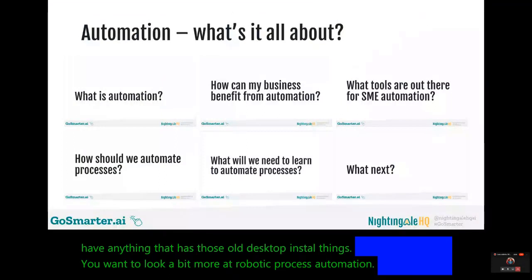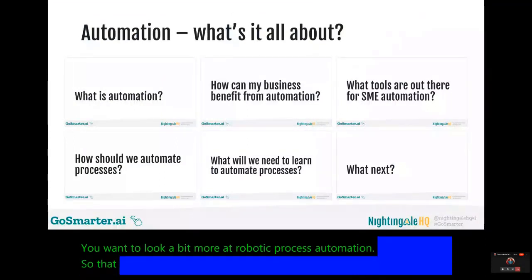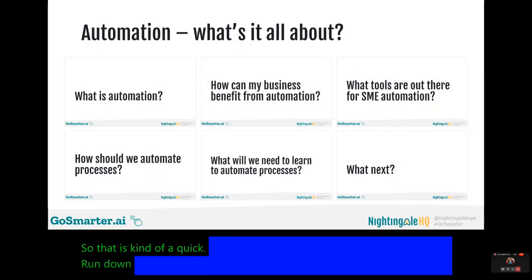Many small businesses these days work primarily in the cloud — you might have bookkeeping software like Xero or QuickBooks, your office apps in the cloud, cloud storage like OneDrive or Dropbox, scheduling systems and booking apps, and most of that can work with standard automation. But if you have anything with those old desktop installs, you'll want to look more at robotic process automation. So that is a quick rundown on what automation is.